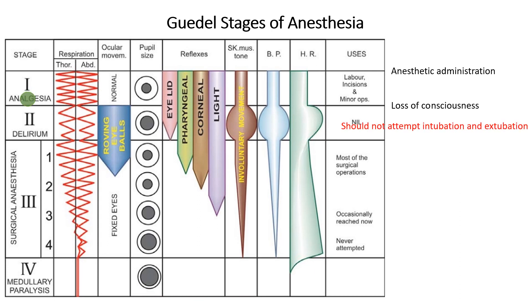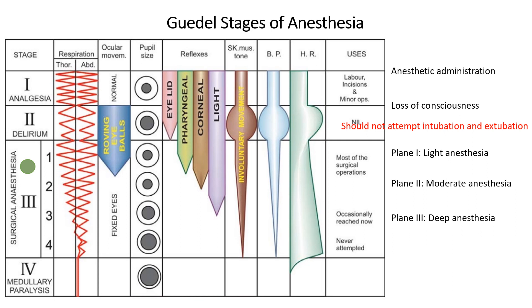Stage 3, or surgical anesthesia, provides the necessary depth for surgery. Breathing becomes regular, muscle tone decreases, and reflexes such as corneal and laryngeal reflexes are suppressed. This stage is subdivided into planes. Plane 1 is adequate for minor procedures with some reflex responses. Plane 2 is optimal for most surgeries, with full unconsciousness and no reflexes. Plane 3 is suitable for invasive procedures, with profound muscle relaxation and absent reflexes. Plane 4 represents a dangerously deep level, leading to respiratory and cardiovascular depression.